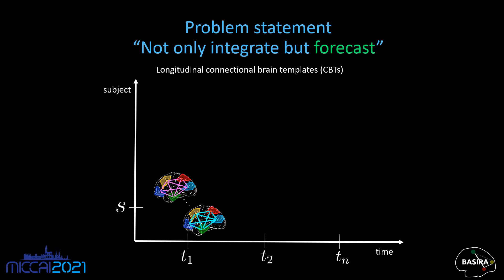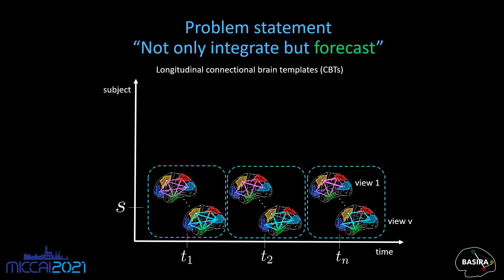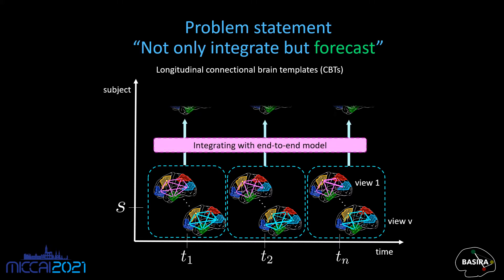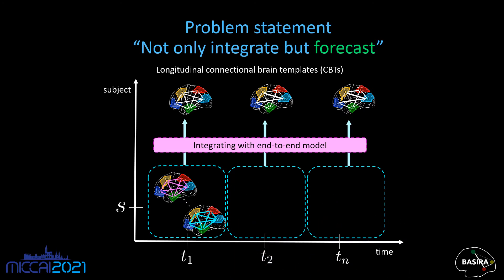However, our main problem is not only to integrate, but forecast. Let us have a subject S on a specific time point T1. Since the brain connectivities are dynamic, they might change over time, particularly in certain diseases such as Alzheimer's. When we have multiple time points for each subject in a population, we define this as a longitudinal brain multigraph population, and we can integrate them into longitudinal CBTs using an end-to-end model. But what if a model could forecast CBTs without the need of future time points? We could predict and compare the changes at population level. Therefore, we design a predictive integrator that forecasts CBTs at future time points.